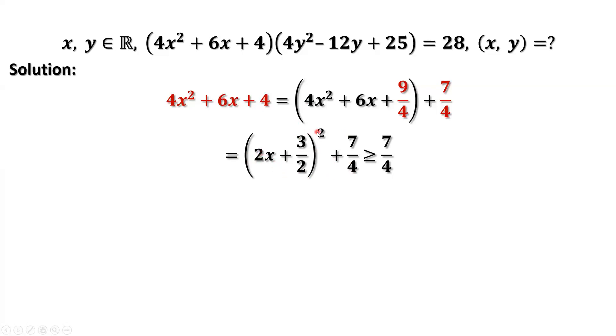Anything square is always bigger than or equal to 0. Therefore, this part is always bigger than or equal to 7 over 4. The equal sign holds if and only if 2x plus 3 over 2 equals 0.